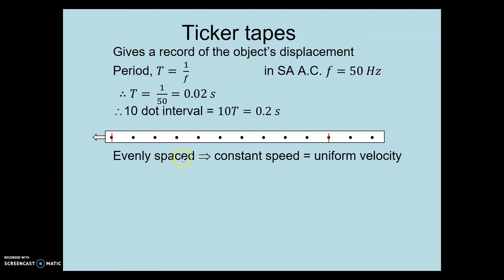Because these are evenly spaced, it represents the motion at a constant speed in a straight line, uniform velocity.